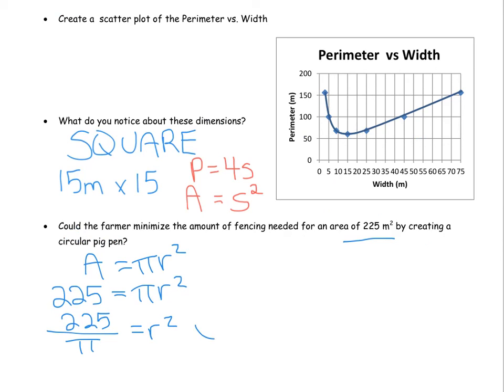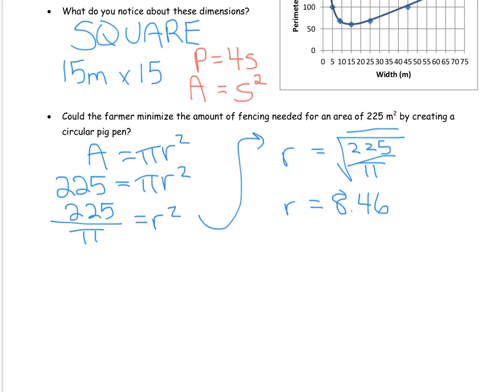So that equals πr². 225 divided by π. So then I can actually find r by doing the square root of 225 divided by π. And you punch that into your calculator and see if you get the same as me. I get a number like 8.46. We will stop there for your dimensions. So that would be the dimensions of a circle to minimize the amount of fencing.